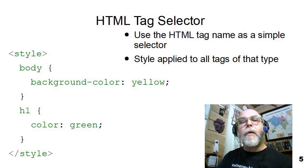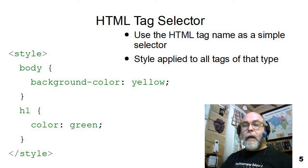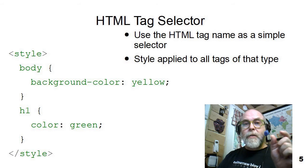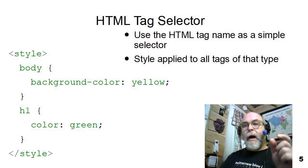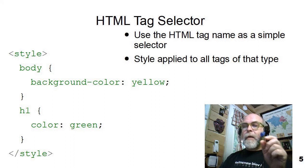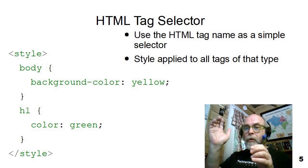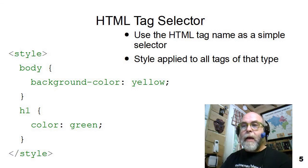Let's talk about the first selector I want you to know: the HTML tag selector. The HTML tag selector is just exactly what it sounds like. For the selector text, you put the tag name — body, H1, P, whatever. For example, if you want all of the I tags to be pink, you would just say I, open curly brace, color pink, close curly brace, and they'd all automatically be pink.